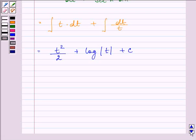tan square x divided by 2 plus log of mod tan x plus c which